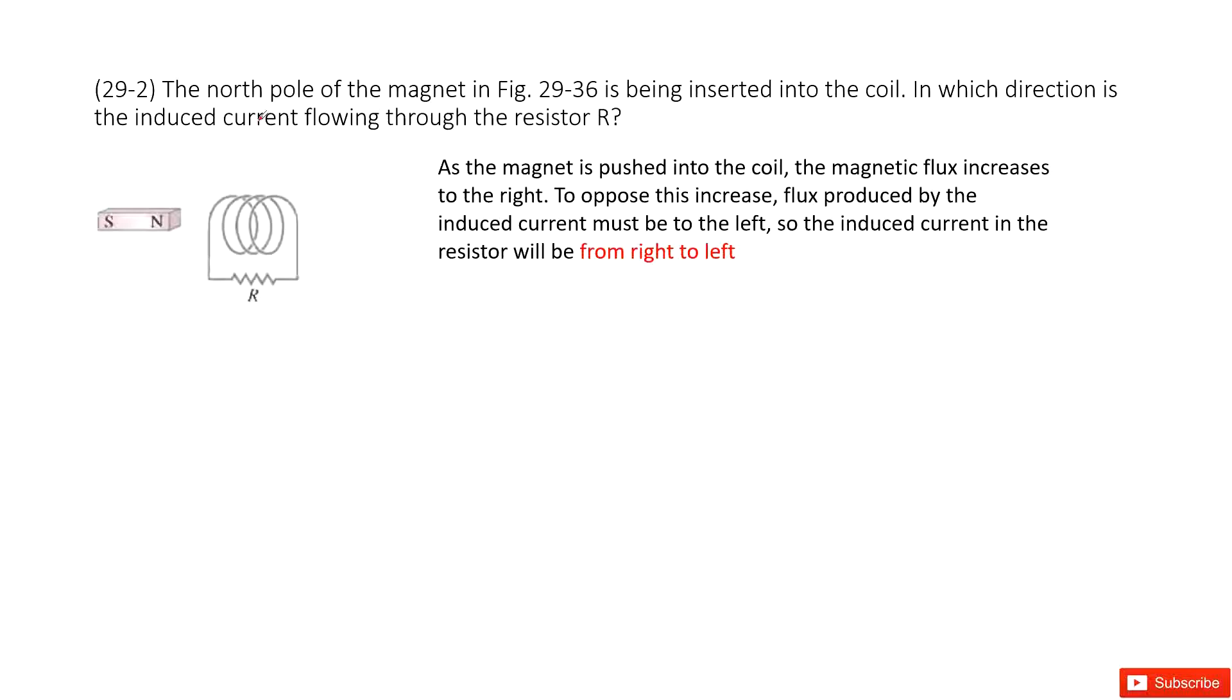So we can see, the problem tells us we have a magnet, right? The north pole is there and then it is being inserted in this coil. It asks you what direction the induced current flows through the resistor.